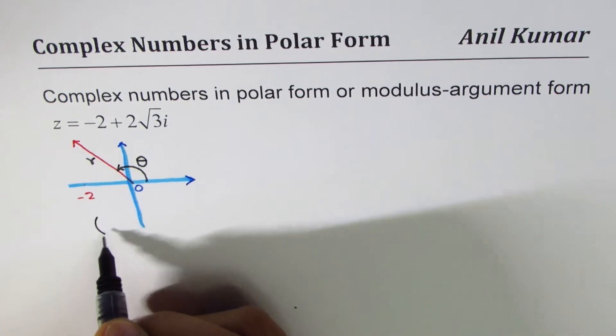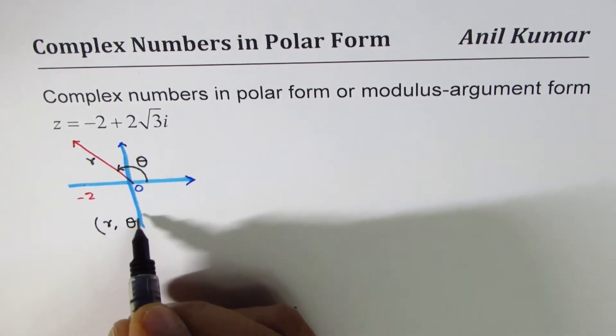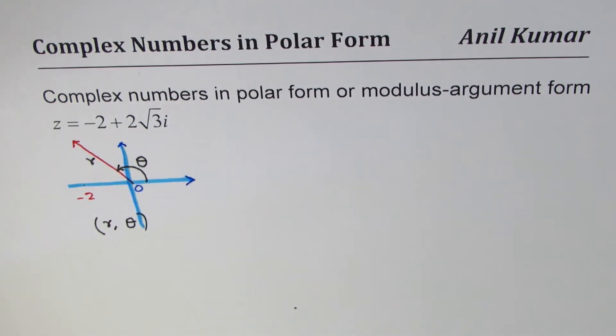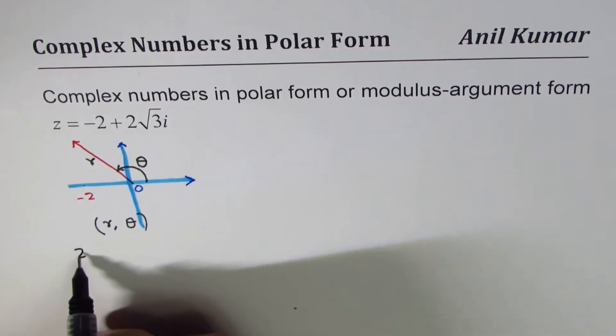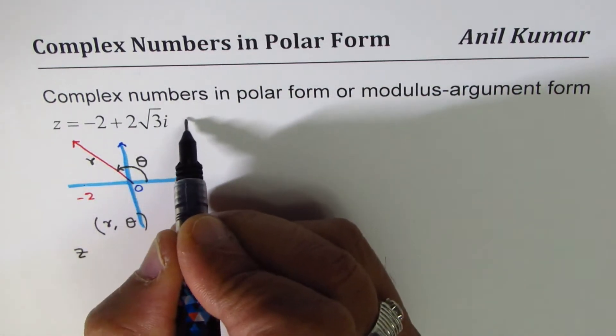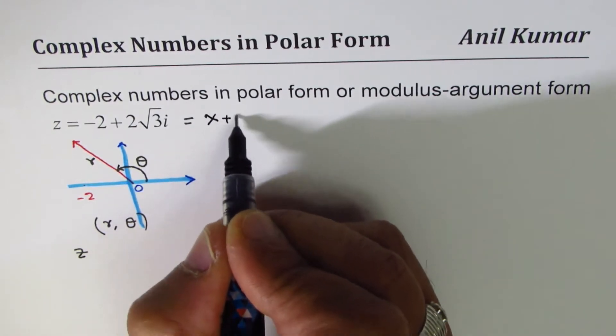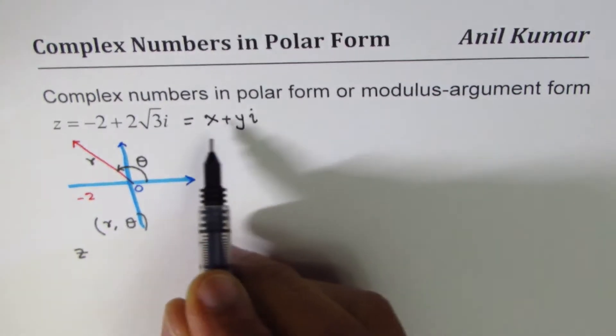Now in complex form, you could write this as r theta. We have to find what r is and what theta is. At times, we prefer to write, so this form which is given is basically x plus yi, general form.